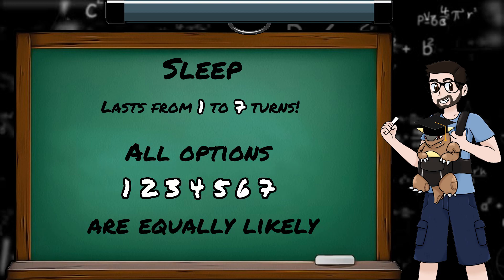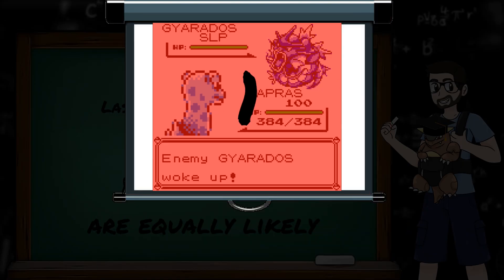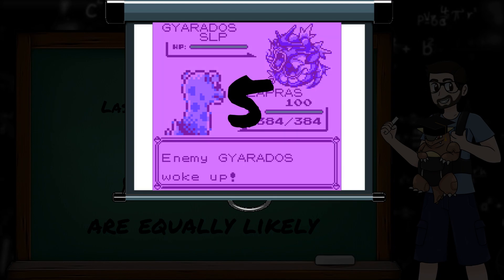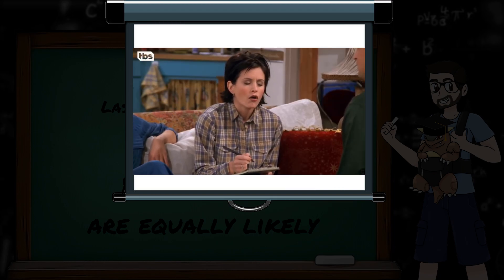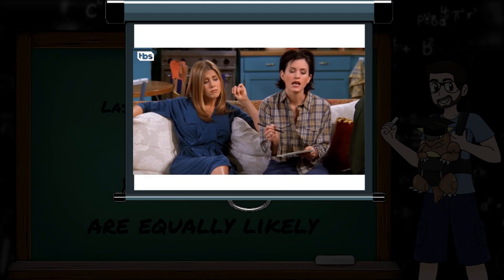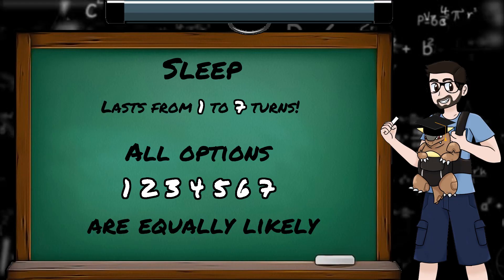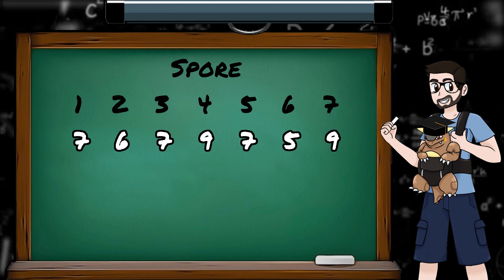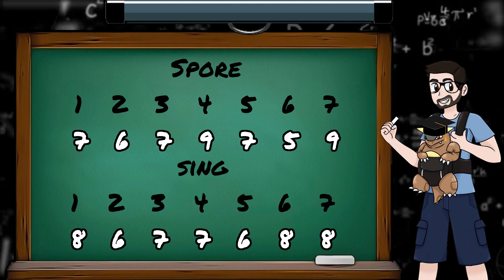Also fun to note is that it's a legitimate random number. It's equally likely to be any of the options, meaning it's equally likely to be a 1 turn sleep as it is a 7 turn sleep. I refuse to believe that, so put it to the test, and sure enough after 50 spores and resets I got results across all options. Monica might have been a bit ambitious with all those 7s, but after 50 attempts the splits across the options were pretty even, and I did the same test with Sing and got similar results. The strength of the sleep doesn't vary with the type of sleep move that's used.